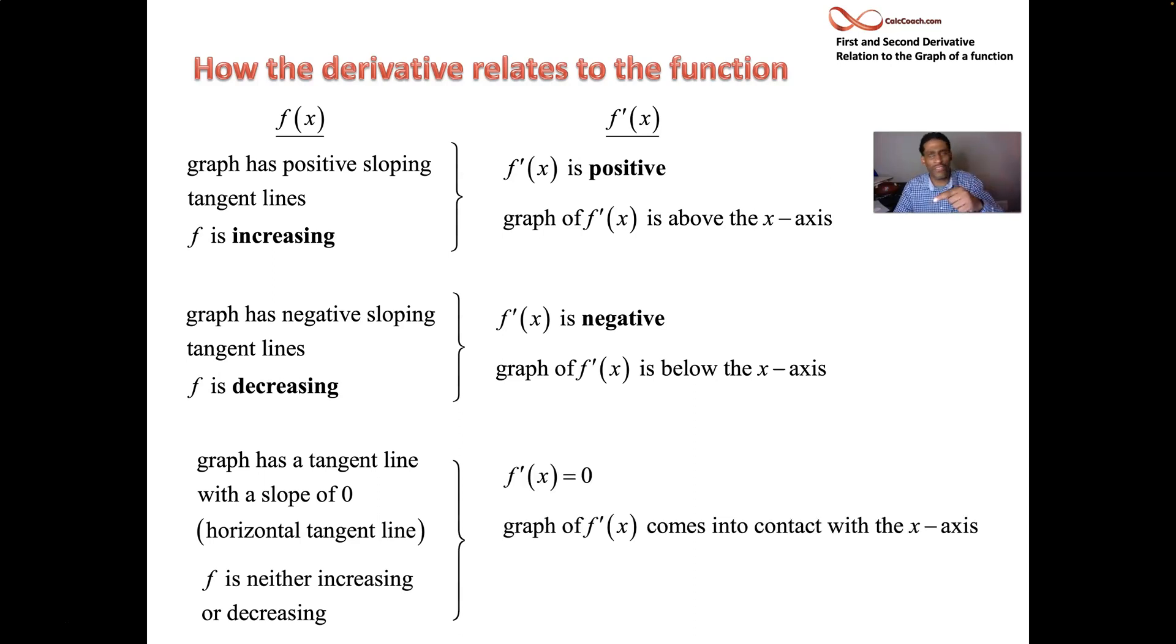What does that mean about the actual derivative? Derivative is equal to 0. And if you're looking at the graph of the derivative, what does it mean to be equal to 0? It means it comes into contact with the x-axis. It may not go through the x-axis but at least touches the x-axis. So you can be looking for places where your derivative graph touches the x-axis, because those correspond to places where your derivative will be equal to 0.